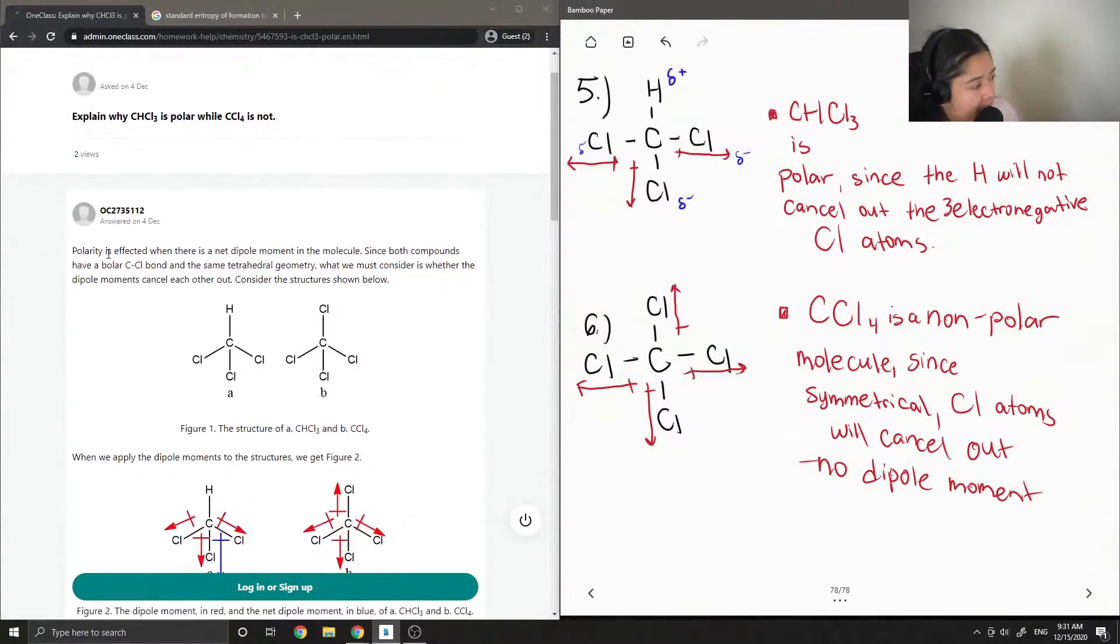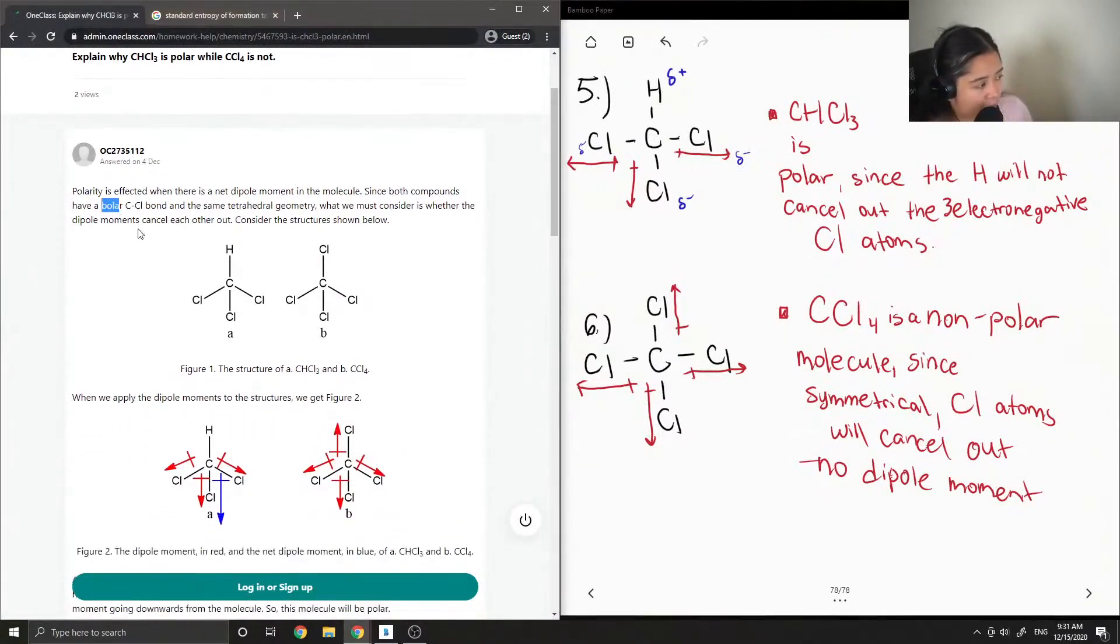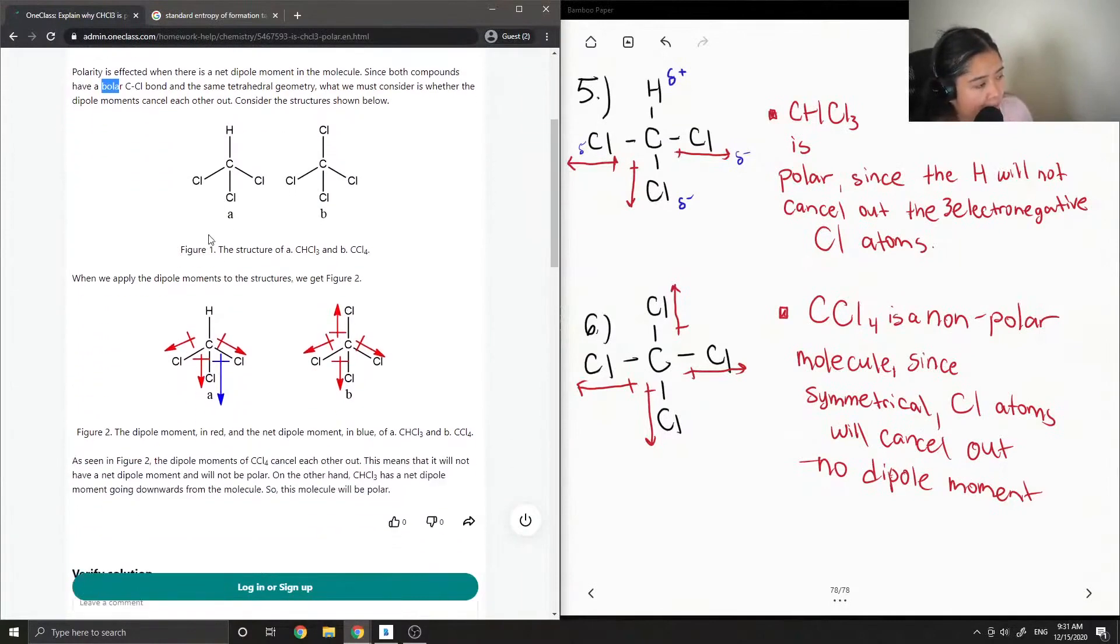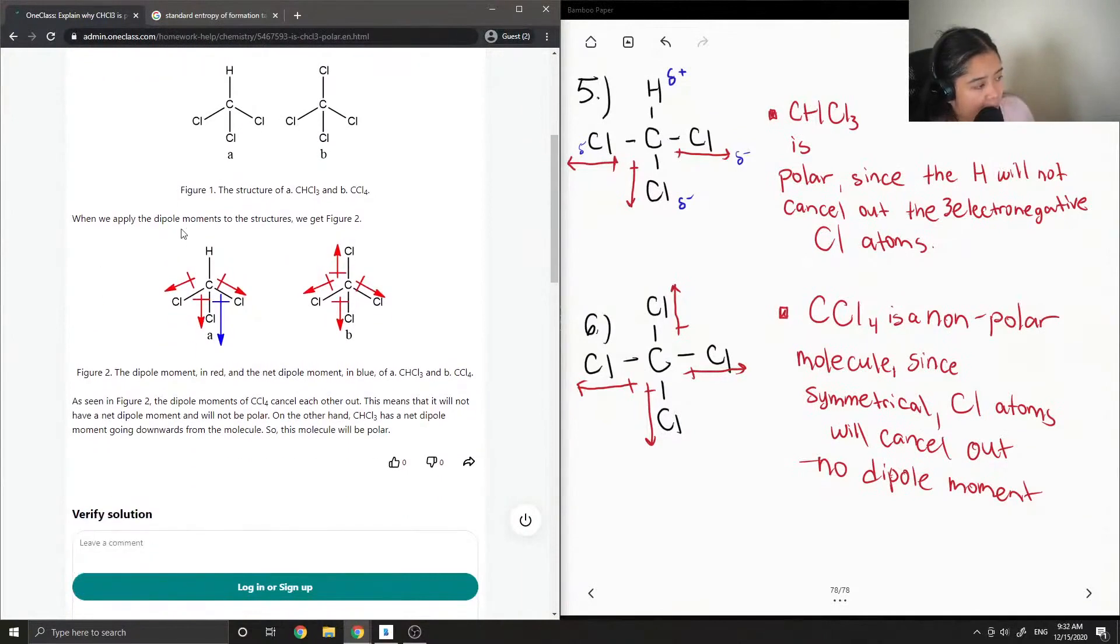Polarity is affected when there is a net dipole moment in the molecule. So since both compounds have a polar carbon-chlorine bond and the same tetrahedral geometry, what we must consider is whether the dipole moments cancel each other out. Consider the structure shown below. When we apply the dipole moments to the structures, we get Figure 2.